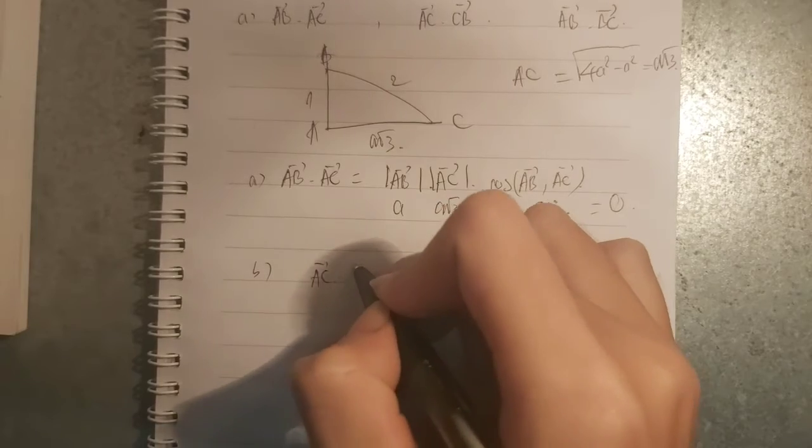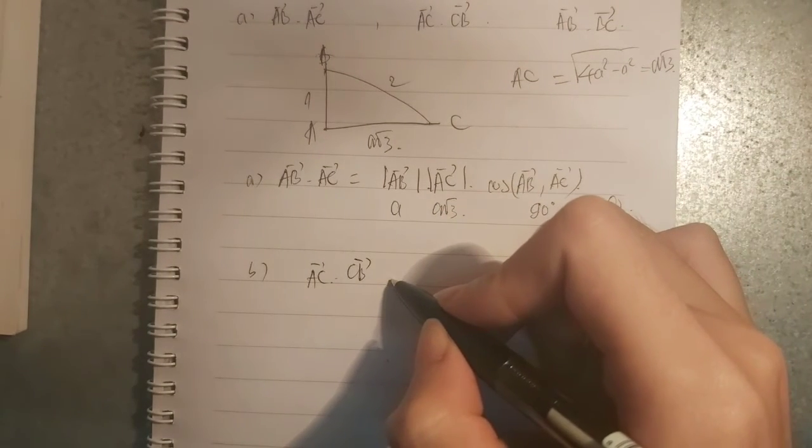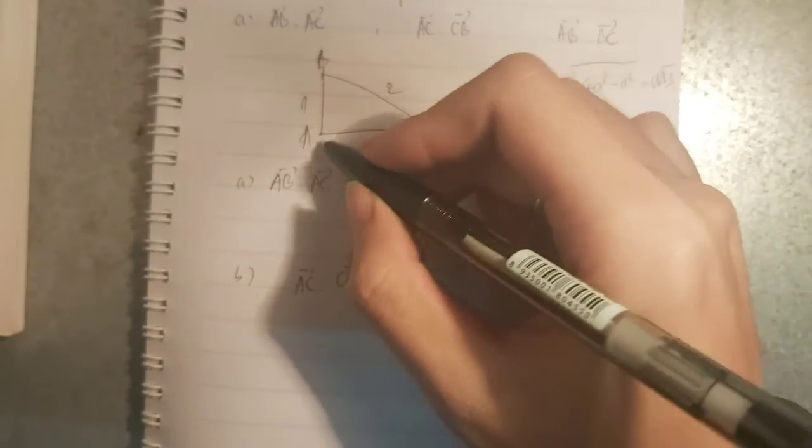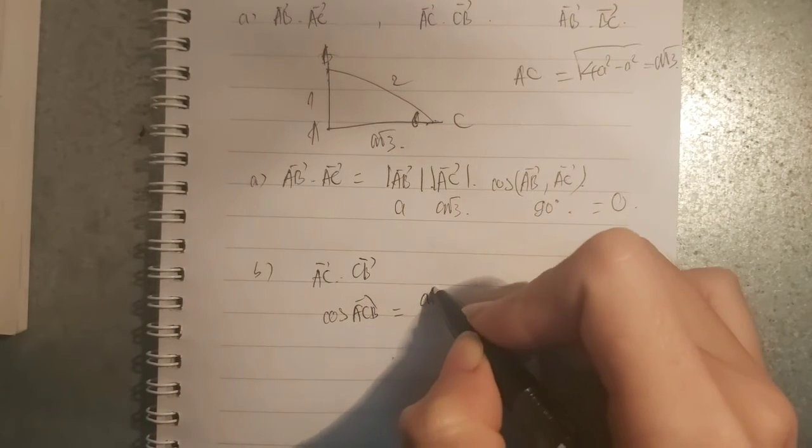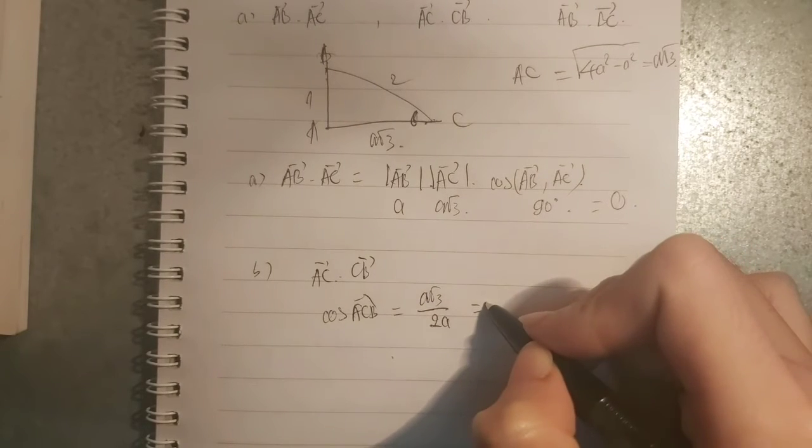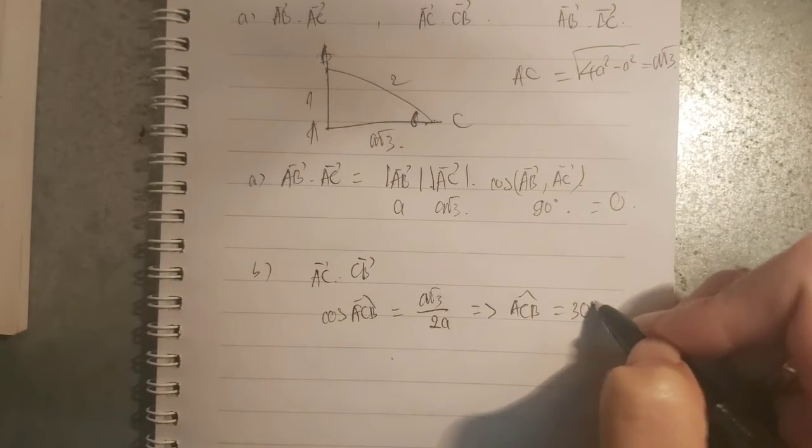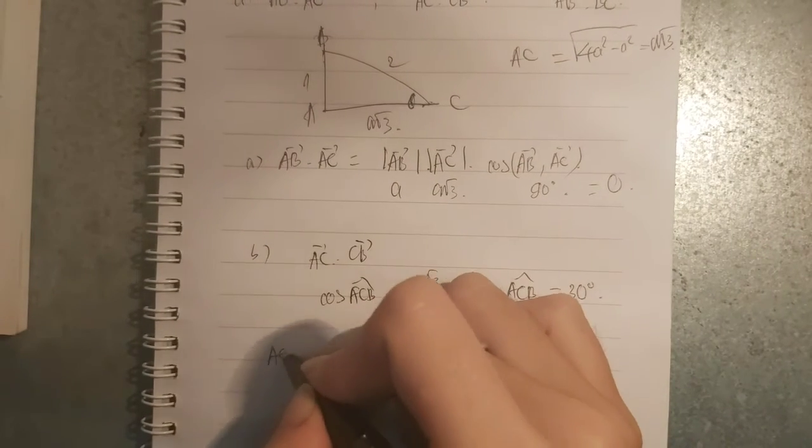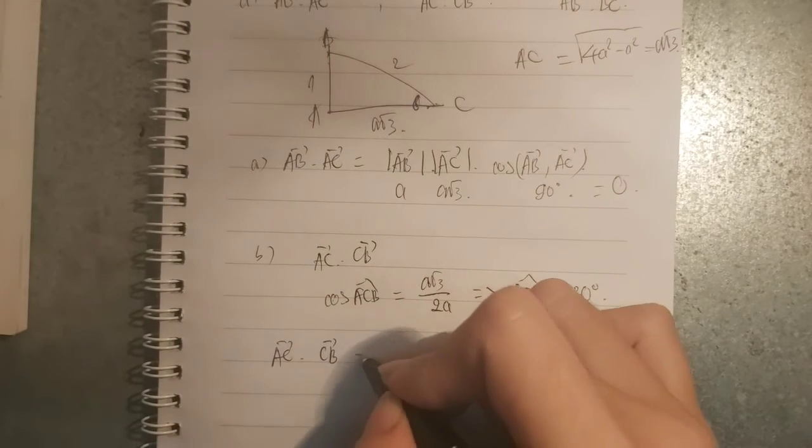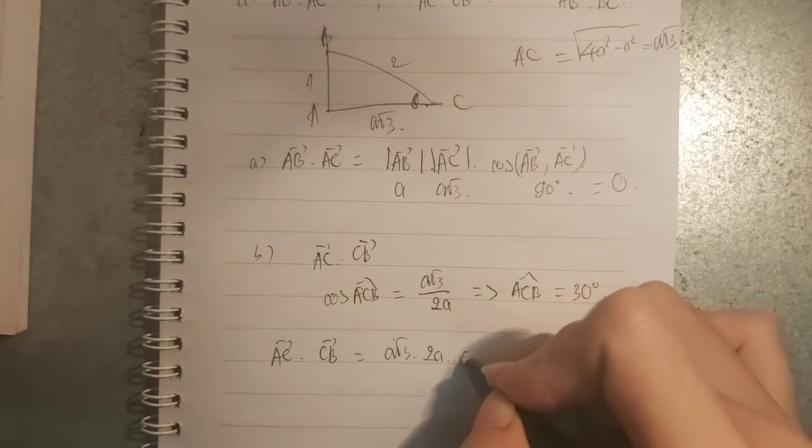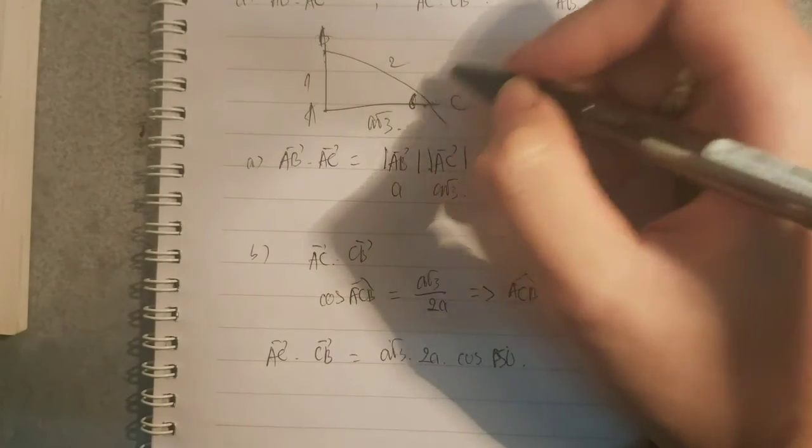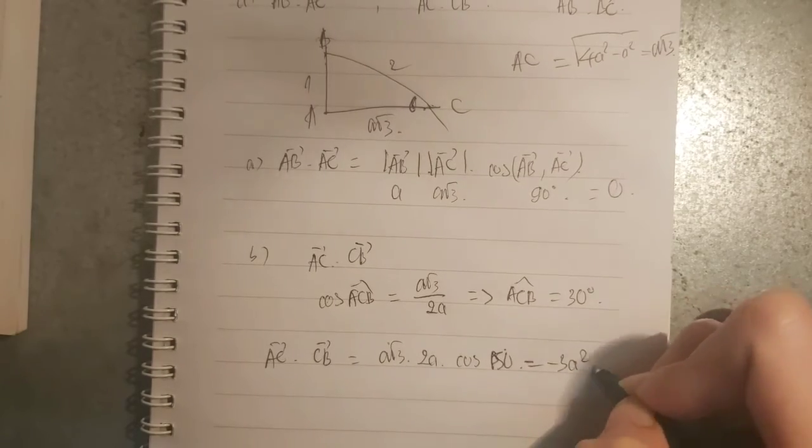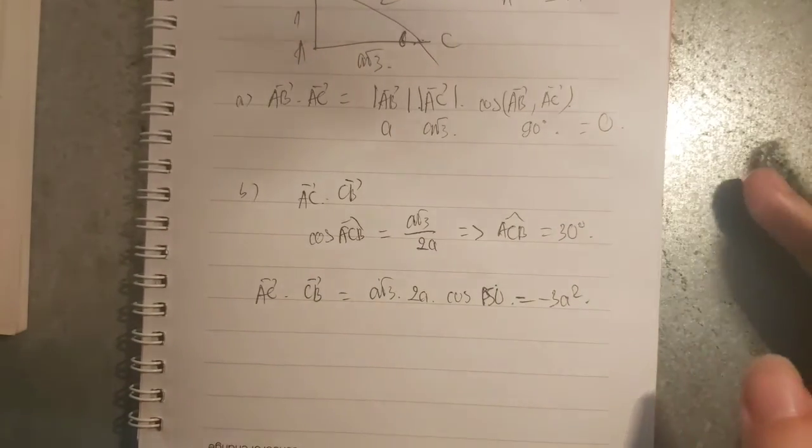Sang phần B: AC x CB. Thì góc sẽ là ACB. Chúng ta sẽ có cos ACB = a√3 chia 2a, suy ra góc ACB = 30 độ. Sau đó AC x CB sẽ bằng a√3 nhân 2a nhân cos 30... cos 150, tại vì nó là góc này. Và nó sẽ bằng -3a². Đó là phần B.